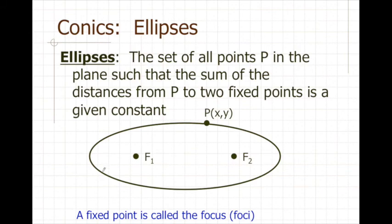What this definition means is that if I find the distance between a point and a focus, and the point and the other focus, and I add these two distances together, they're going to be the same for every single point along the ellipse.